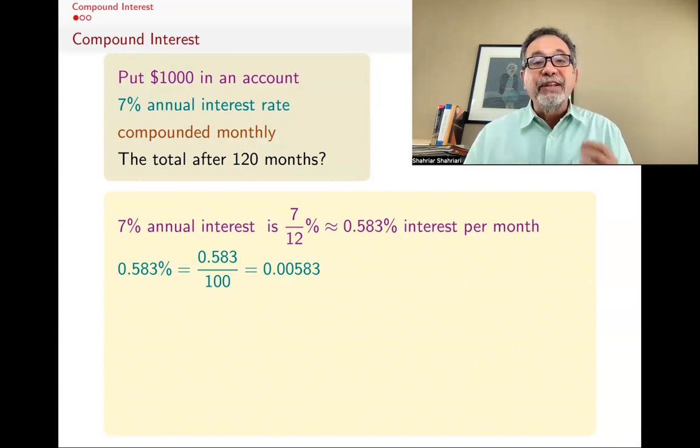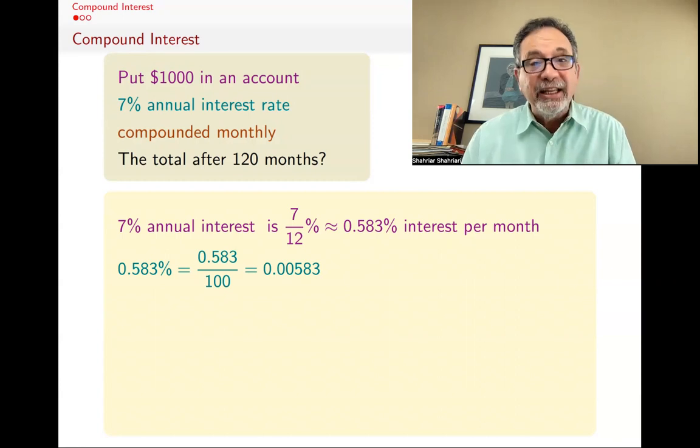So what they do is they say, for one month, what's the interest? Well, it's 7% divided by 12, and that's 0.583% interest per month.